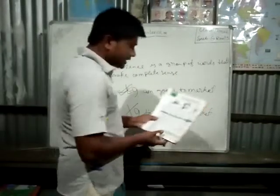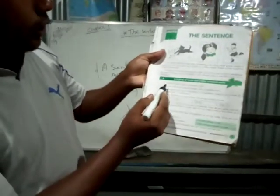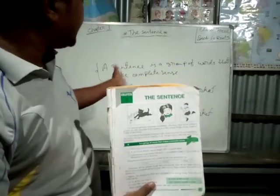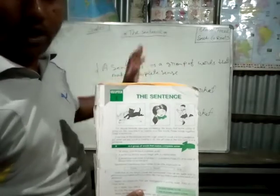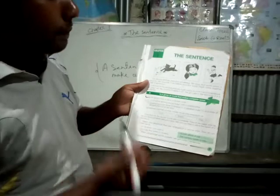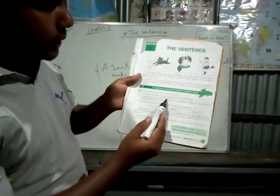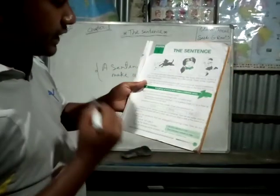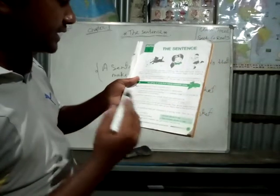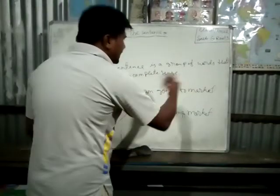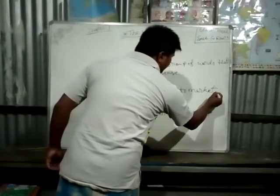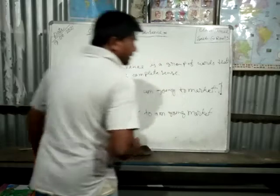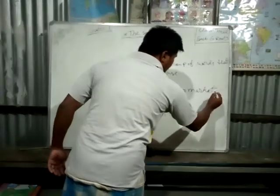Let me show you what the rules are. Number one: all words have to be in proper order. Proper order means — suppose I use 'I', after 'I' there will be 'am', after 'am' there will be 'going', and then 'to', after that 'market'. Number two: a sentence should always begin with a capital letter — here I have written 'I' as a capital letter. Number three: marks — the ending of a sentence will have a full stop. Sometimes if you are asking a question, then a question mark will be there. Sometimes for surprise, an exclamatory symbol will be there. Basically in a sentence, you have to end with a full stop.